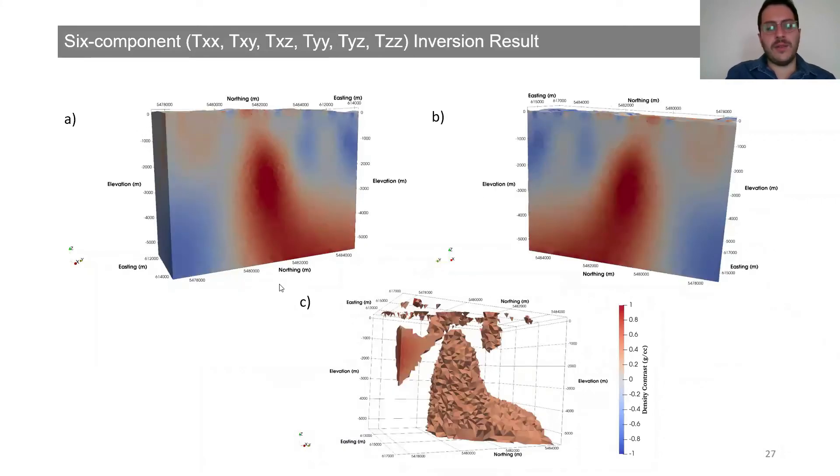It is common to utilize all available information for the inversion. Even though the Tzz component was sufficient to obtain the structure, we inverted six components, the whole independent and Tzz component. Figure A and B show the cross-section views of the recovered model. Figure C shows the threshold view. For clarity, we removed the cells below 0.2 grams per cubic centimeter. The thing is that providing additional components to the inversion improved the structural quality of the recovered model for the inversion of six components.